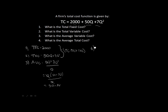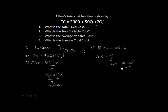Question four works similarly: what is the average total cost? We know our total cost is the function 2,000 plus 50q plus 7q squared, and to get an average we simply divide by q. So average total cost ATC equals total cost divided by q, giving us 2,000 plus 50q plus 7q squared, all divided by q.